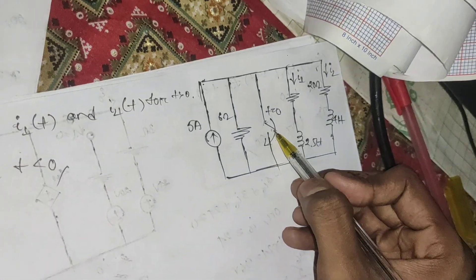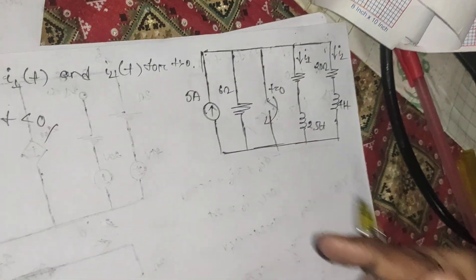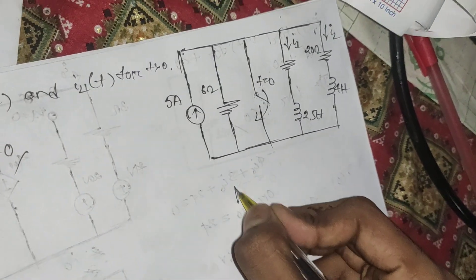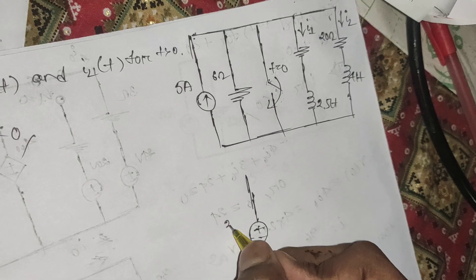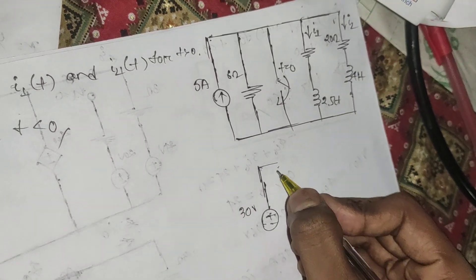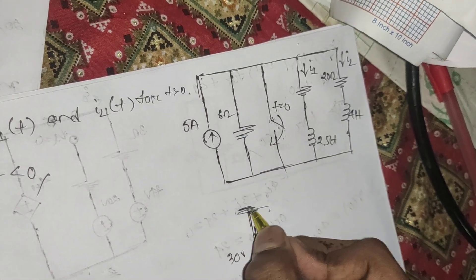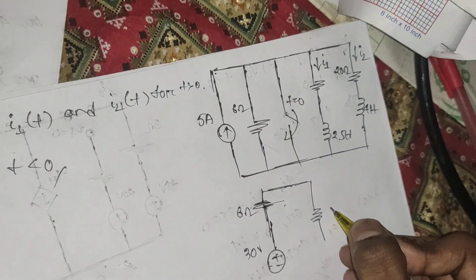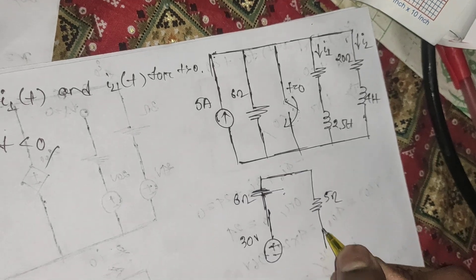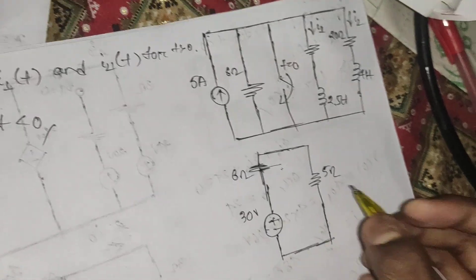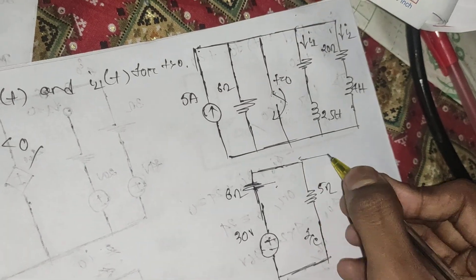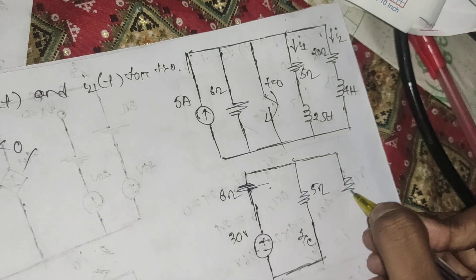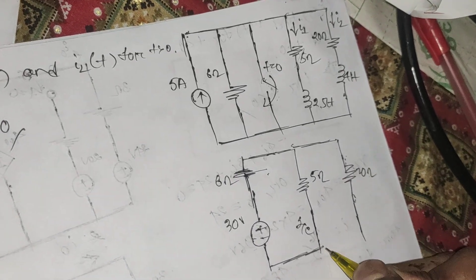For t less than 0, the switch is open. Let's use source transformation — it will be plus/minus 30 volts in series with 6 ohms. Then 6 ohms and 5 ohms are in the circuit. We replace the inductors with short circuits because the circuit is in steady state, giving us a 5 ohm and a 20 ohm element.